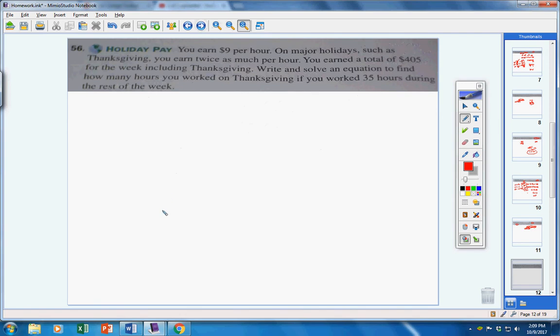Number 56. You earn $9 an hour. Remember, on major holidays, you earn twice that. You earned a total of $405 for the week, including Thanksgiving. They want to know how many hours you worked on Thanksgiving if you worked 35 hours during the week. You get paid $9 an hour, and you did that for 35 hours. So, you made $315 out of your regular pay, but your paycheck was $405. So, out of that $405, $315 was your normal pay. So, subtract that, and we'll get $90. That means you earned $90 on Thanksgiving Day.